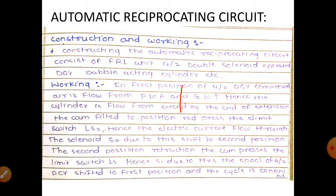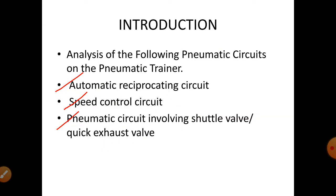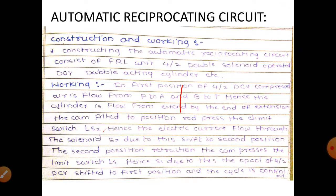The working of the automatic reciprocating circuit: in the first position of the 4x2 directional control valve, air flows from P to A and B to T. Hence the cylinder extends. The cam triggers limit switch LS2, causing electric current to flow through S1, which shifts the valve to the second position. In retraction, the cam presses limit switch LS1, causing S1 to shift the 4x2 directional control valve back to the first position, and the cycle continues.